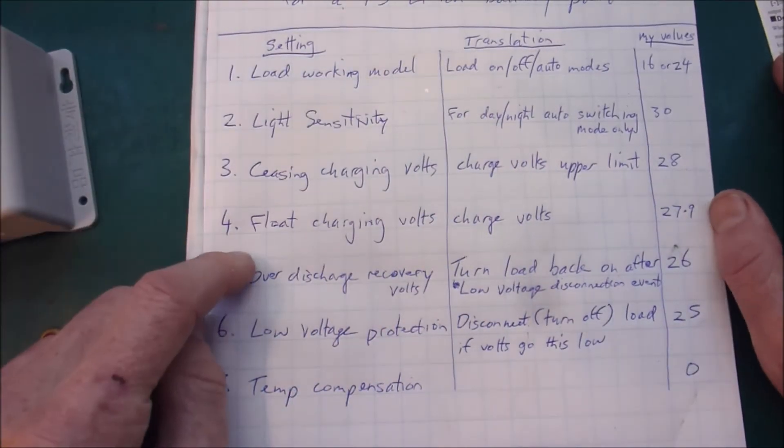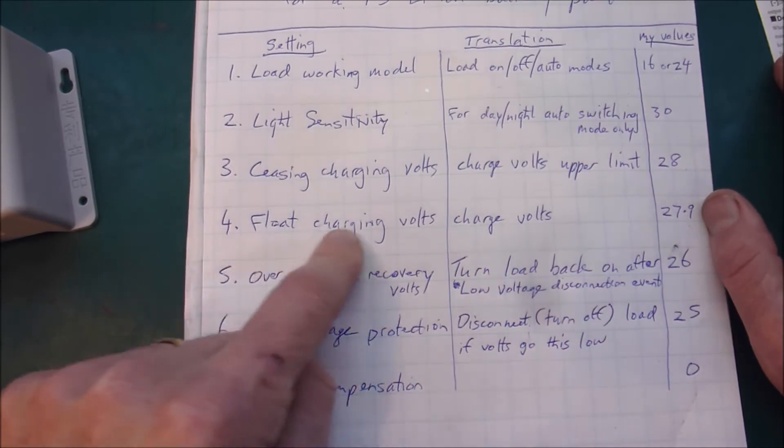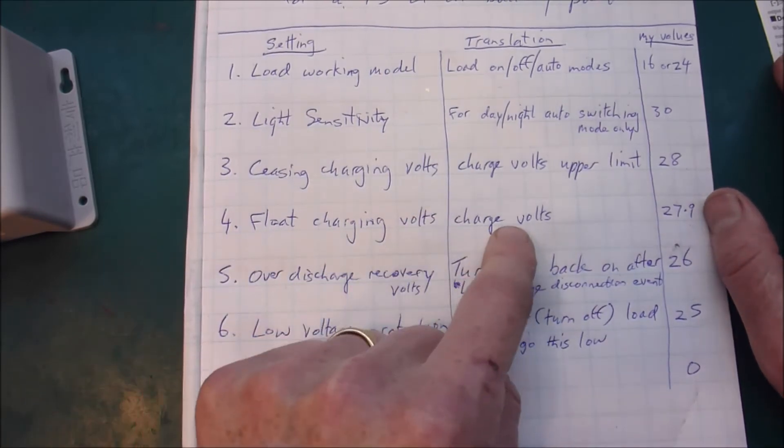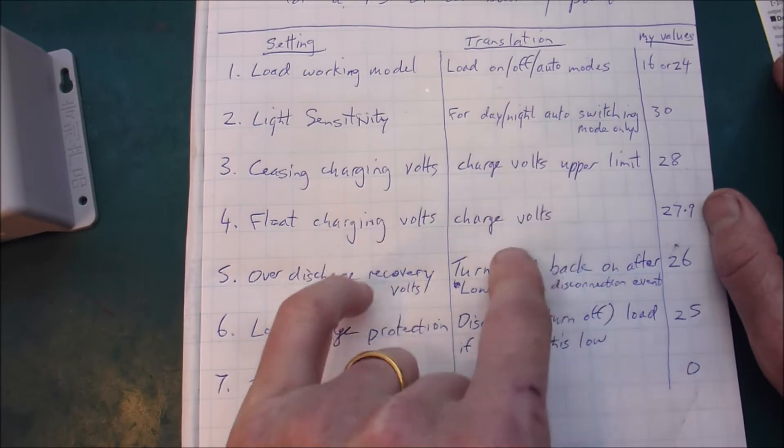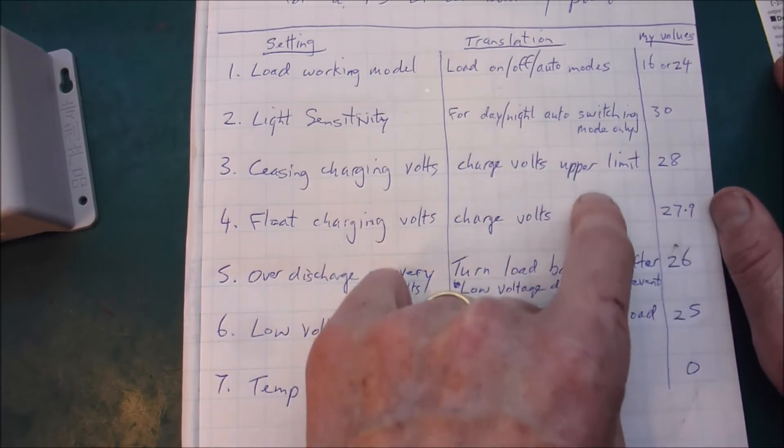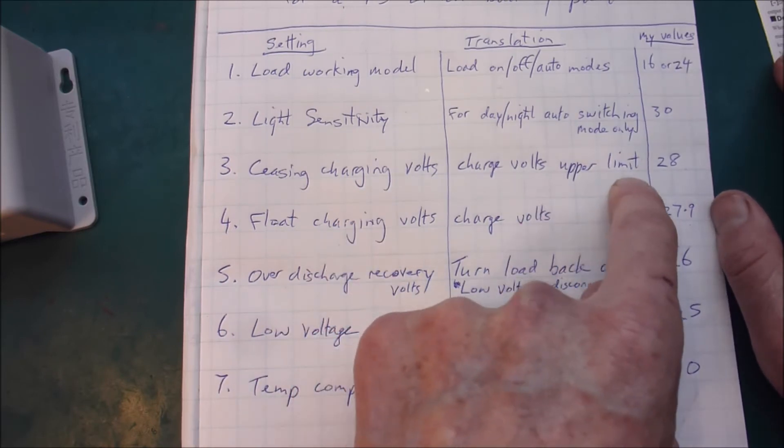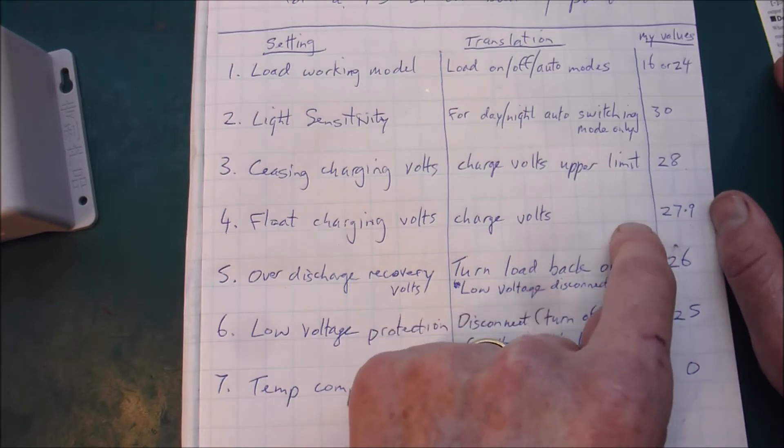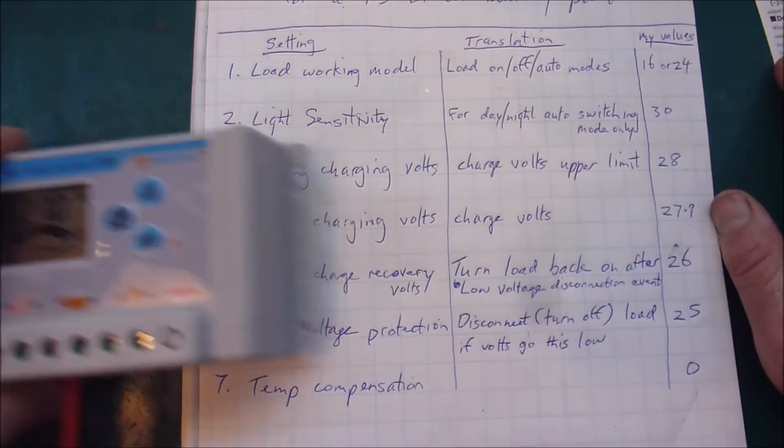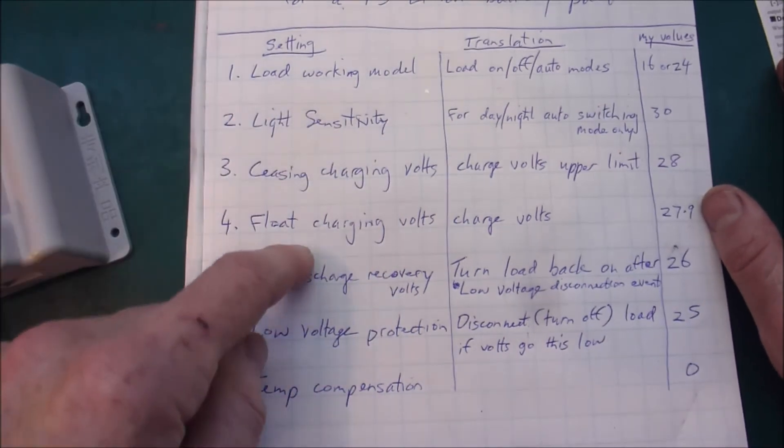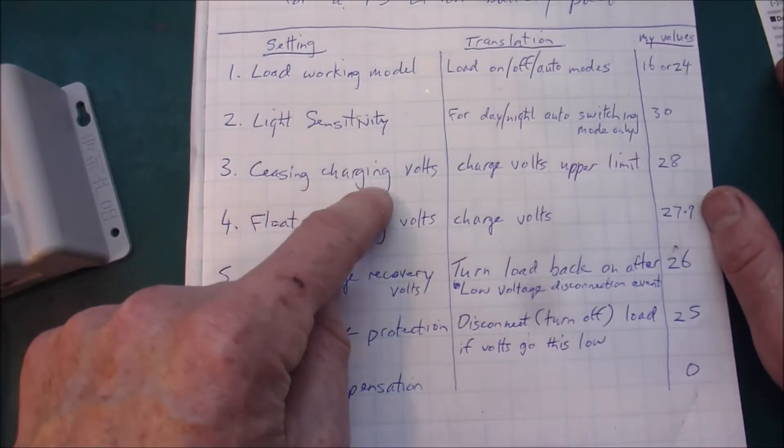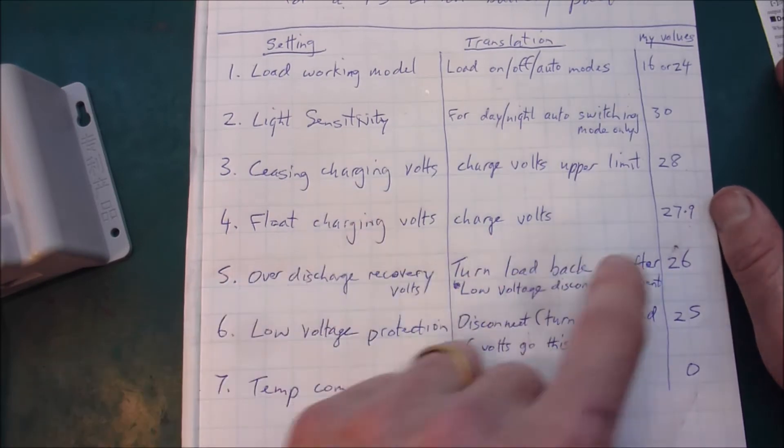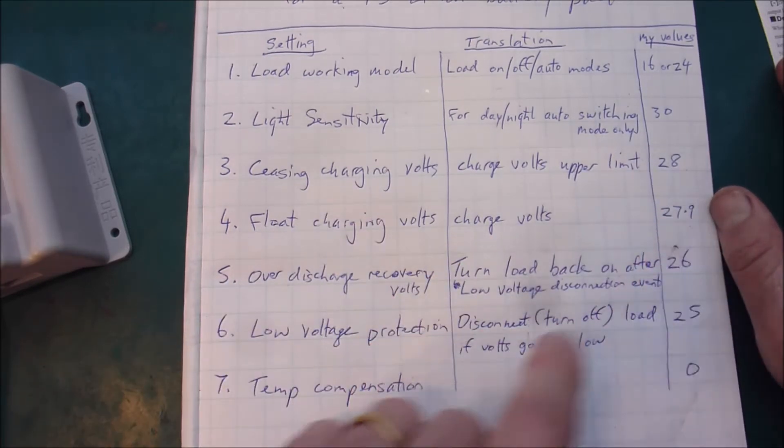So the next setting is the float charger and basically in the way that I use this I have that at the next possible setting under the upper charge limit. If I had my way I'd have it set at 28 but the way this is programmed you can't have the float and the cease charging volts be the same value. So this has to be slightly lower.